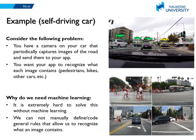There are a lot of tasks that cannot be solved easily without machine learning. For example, suppose you have a camera on your car that periodically captures images of the road and sends them to your app, and you want your app to recognize what each image contains — pedestrians, bikes, cars — so the car can take the right action at the right time. The answer is that it's extremely hard to solve this without machine learning, because we cannot manually define all possible rules to recognize what an image contains.